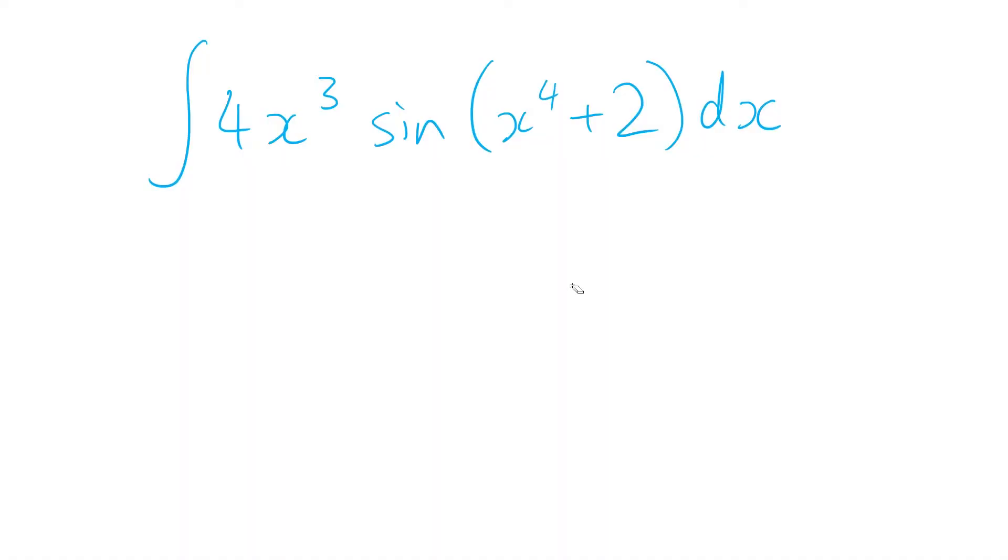So it takes something like this. We've got this inside the sine function and then we've got its derivative outside that same function. So we're going to let whatever's inside the function be equal to u.